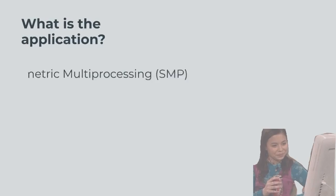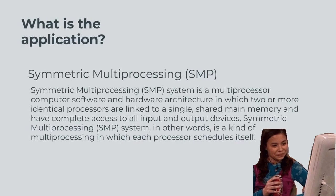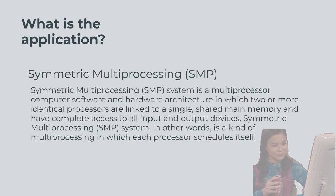What is the application? A symmetric multiprocessing system is a multiprocessor computer software and hardware architecture in which two or more identical processors are linked to a single shared main memory and have complete access to all input and output devices. In other words, it is a kind of multiprocessing in which each processor schedules itself.